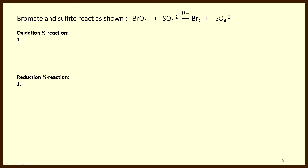This first reaction shows bromate reacting with sulfite. This reaction is carried out in acidic solution, as indicated by the hydrogen ion situated above the reaction arrow. Our first step is to separate this redox equation into two half-reactions — one for oxidation and one for reduction. We need to figure out what's being oxidized and what's being reduced, so let's calculate the oxidation numbers of the atoms involved.